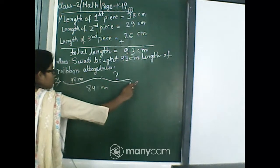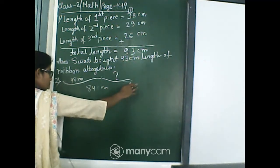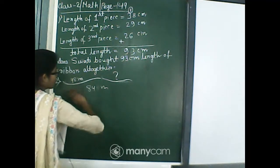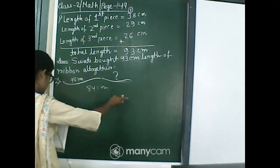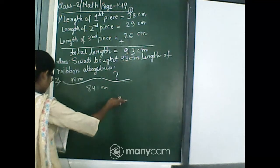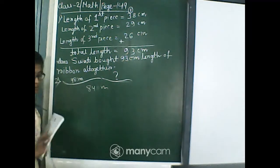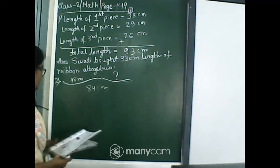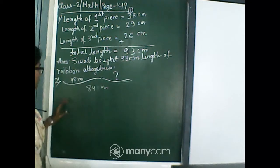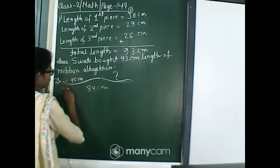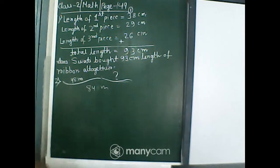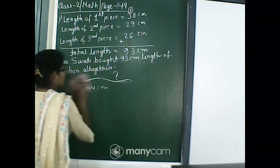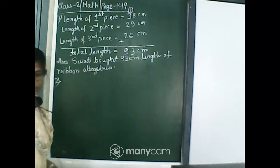Now what we have to do? We have to subtract the total length. We have to subtract this 48 meter from the total length, isn't it?